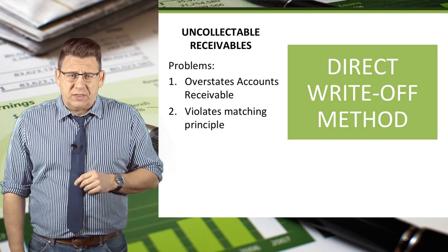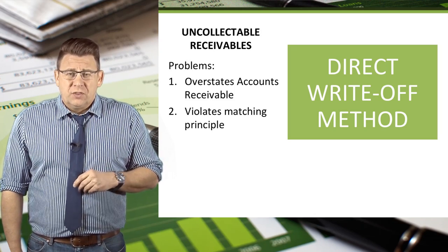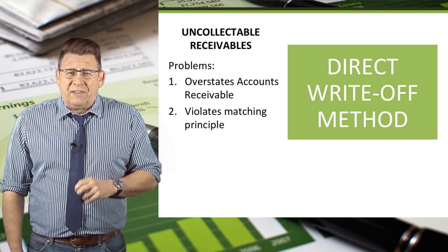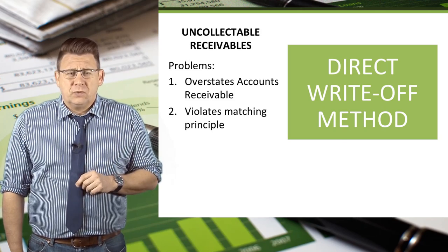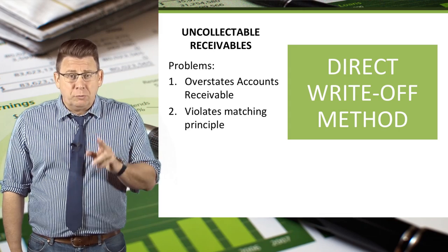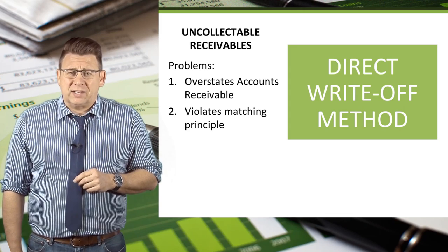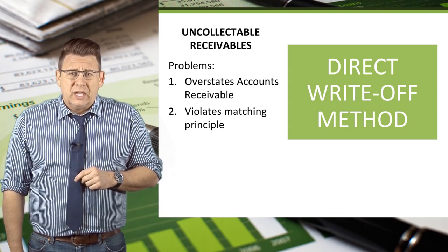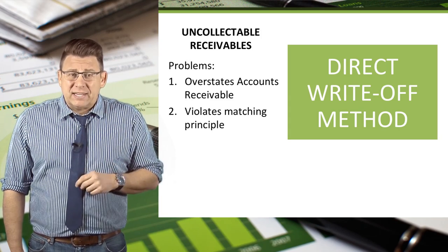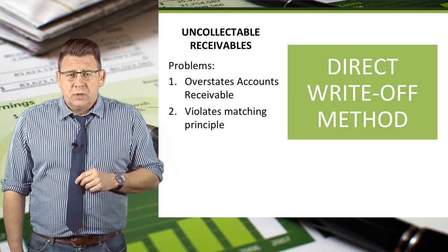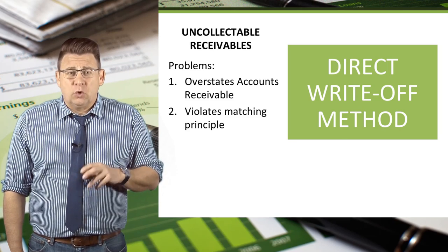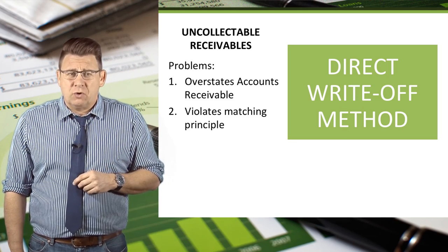There are some problems with this method. The direct write-off method always reports accounts receivable at their full amount, so assets are overstated on the balance sheet, assuming some accounts won't be collected in the future. It does not match bad debt expense against revenues very well. Many times, accounts aren't deemed to be uncollectible until well after the sale has been recorded.